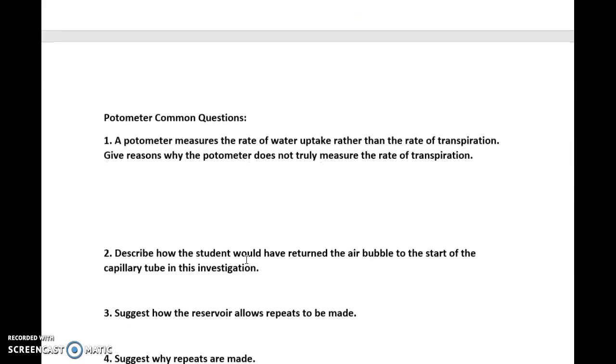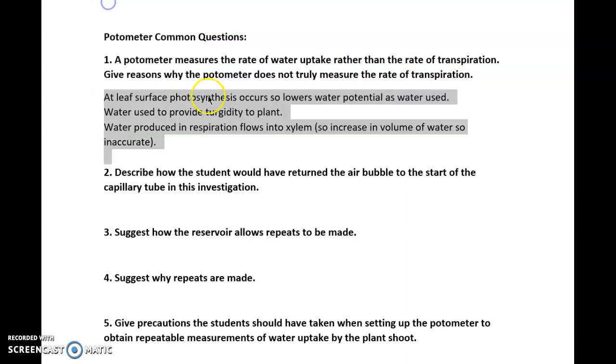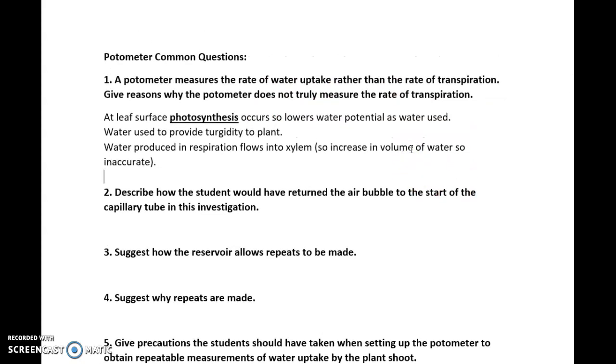Common questions that are asked for potometers. Number one: a potometer measures the rate of water uptake rather than the rate of transpiration and give reasons why the potometer is not truly measuring transpiration. This is what we were just talking about. Leaves look at photosynthesis. We need water for photolysis, so obviously it will lower the water potential because water will be used up. Water is used to make the plant cells more turgid. This is just literally listing the roles of water in plants.